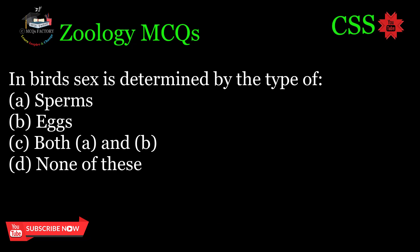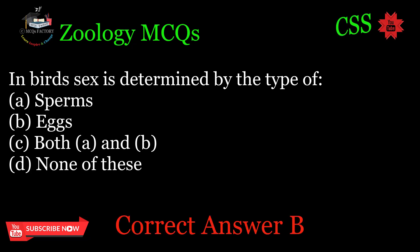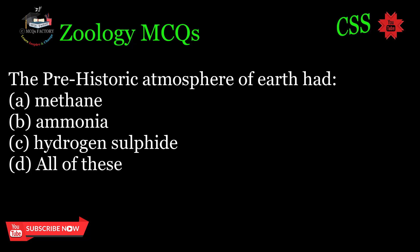In birds, sex is determined by the type of: A. Sperms, B. Eggs, C. Both A and B, D. None of these. Correct answer: B.